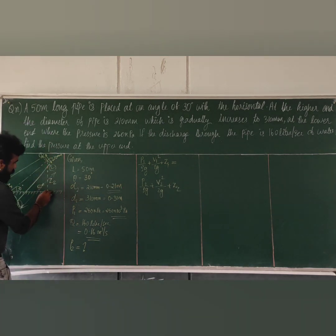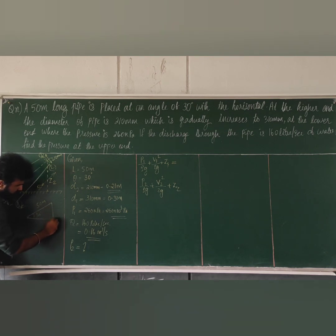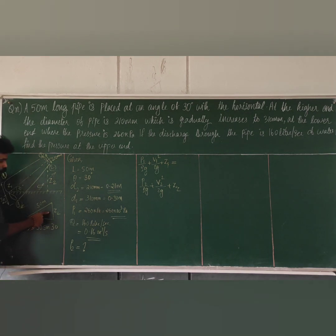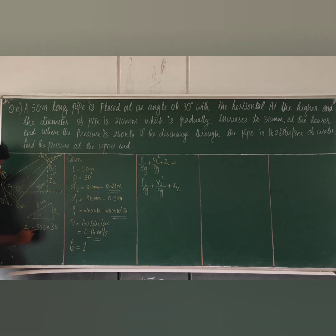Z2 is the height of the upper point above the ground. The pipe length is 50 meters and the angle is 30 degrees. Z2 is calculated as 50 × sin 30°. Since sin θ = opposite side / hypotenuse, opposite side is Z2 and hypotenuse is 50. So Z2 = 50 × sin 30° = 25 meters.